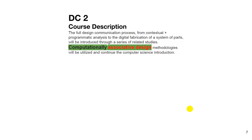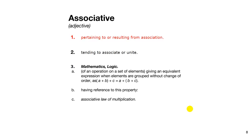I'm going to use the course description as a point of departure. I've highlighted 'computationally associative design.' So what does that mean? Let's look at a couple of definitions. Associative: pertaining to or resulting from association. When I think of associative design in relationship to Grasshopper, for me it's all about relationships.